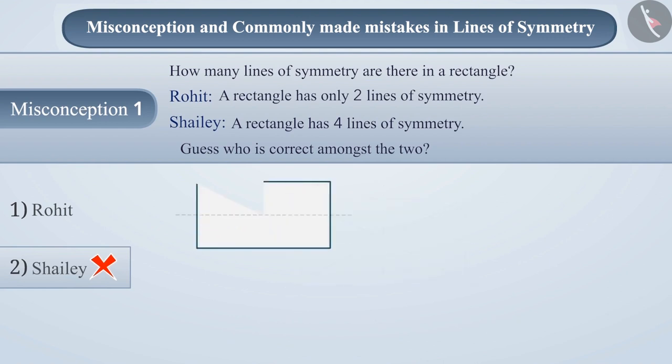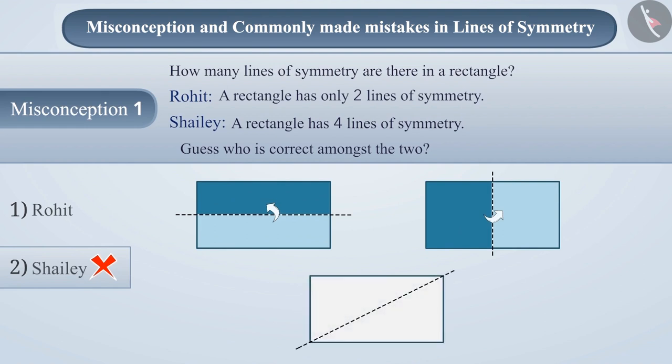If we fold a rectangle horizontally or vertically, then we get two symmetrical halves. But this doesn't happen when we fold the rectangle through its diagonals.